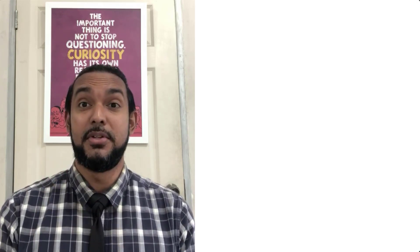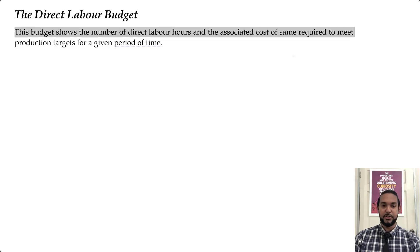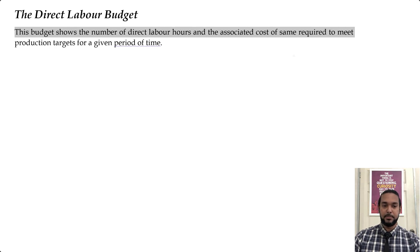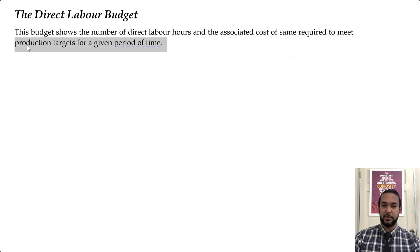Let's get into the material. The direct labour budget shows the number of direct labour hours and the associated cost required to meet production targets for a given period of time. Let's take a look at the example.